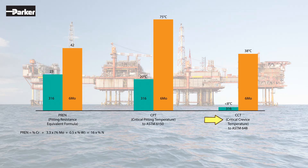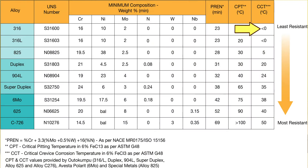The third indicator on this table is called the CCT, or critical crevice temperature. This is another value that we calculate experimentally by following standardized procedures, and it tells us the minimum temperature at which a given alloy is likely to suffer from crevice corrosion. As we can see here, once more, 6MO is far superior to 316. Moreover, stress corrosion cracking testing conducted on both alloys showed that 6MO is likely to last three times longer than 316 when exposed to a corrosive environment.